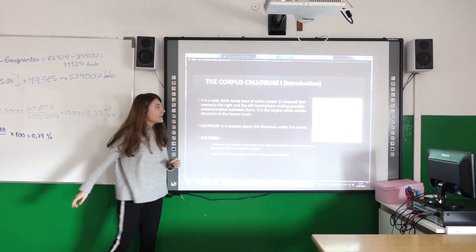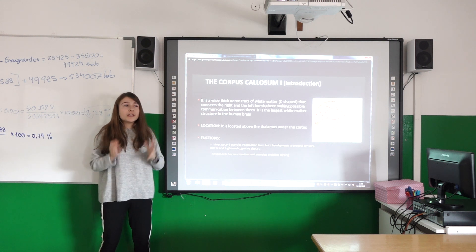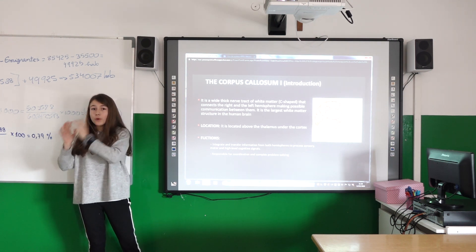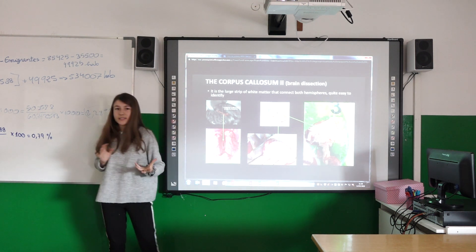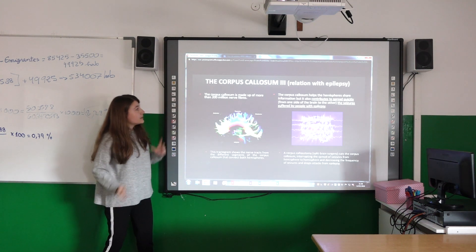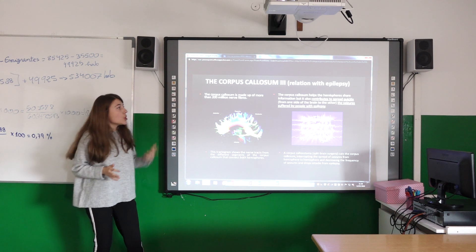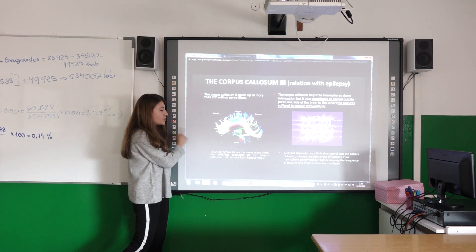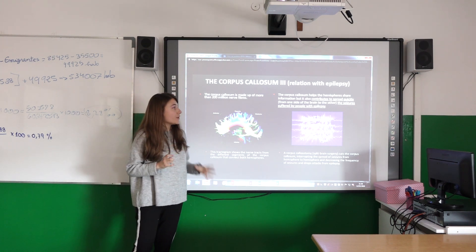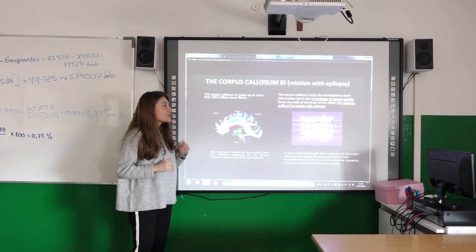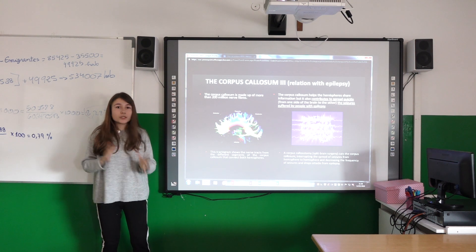The corpus callosum is a thick mass of white matter located between the two hemispheres. It is very important because it controls the functions of the brain and transmits information from one hemisphere to the other. Here you can see the corpus callosum — the white matter is visible. The corpus callosum is made up of approximately 200 million nerve fibers. It also contributes to spreading seizures quickly in people with epilepsy, so one surgical procedure involving the corpus callosum is to cut it so the information travels more slowly.